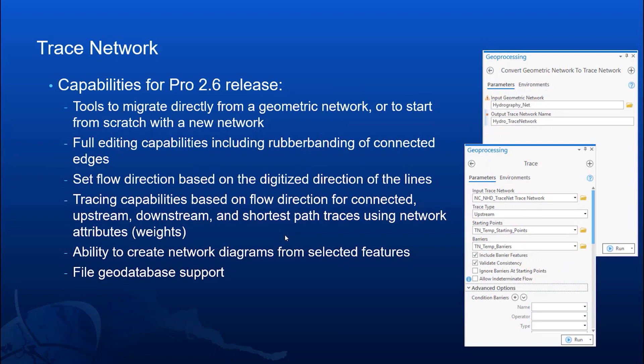With ArcGIS Pro 2.6, the capabilities of the trace network include the ability to move directly from a geometric network — that one-button migration directly to the trace network. You can also start from scratch. You have full editing capabilities including rubber banding of connected edges, feature templates, and so on. You can set flow direction based on digitized direction of lines or against digitized direction. You can then trace your network using connected, upstream, downstream, or shortest path traces using network weights or attributes. You also have the ability to create network diagrams or schematics from selected features, and all capabilities are within file geodatabases.